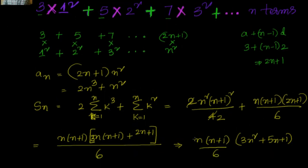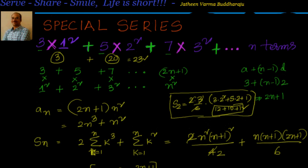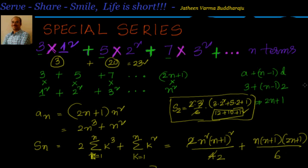Let's cross-check with n=2. Adding 2 terms: first term is 3·1²=3, second term is 5·2²=20, so S₂ should equal 23. Substituting into the formula: 2·3/6 · (3·4 + 5·2 + 1) = 1 · (12 + 10 + 1) = 23. That matches, so we are good to go. We will solve more problems on special series in coming sessions.